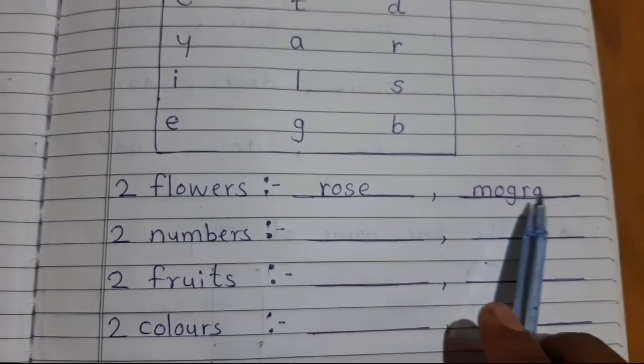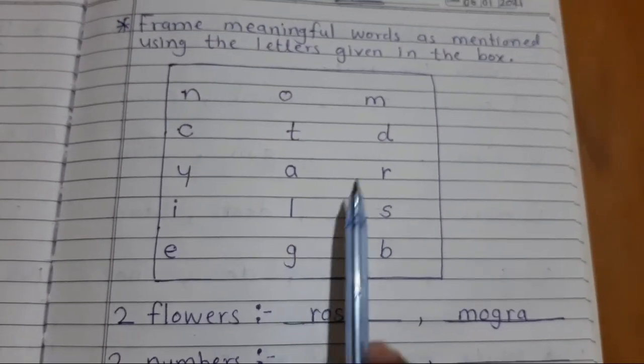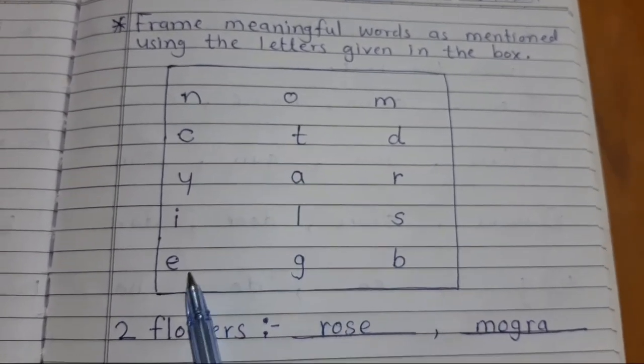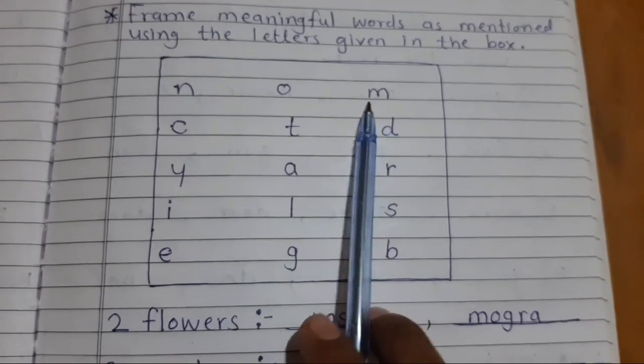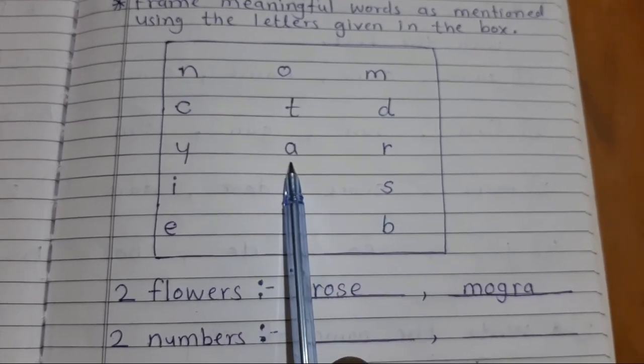So here is the two flowers name. R-O-S-E rose and M-O-G-R-A mogra. See I am using these words only. These letters only. See here. Where is R-R-O-S-E rose and M-O-G-R-A mogra.